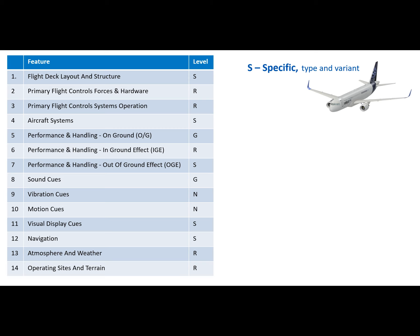Specific level means basically as good simulation as in a full flight simulator level D today. Specific means that the device accurately simulates a certain aircraft type and variant, such as an aircraft standard, block point, or tail number — for example, Airbus A320 with winglets and certain engines and avionics. Representative level means simulation of one type but at a lower level than level S. The simulation is based on one type, for example Airbus A320, but it may take data and elements from different variants of that type, and the level of simulation and data quality may be lower.